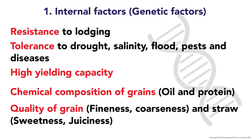In the case of internal factors, the variety should be resistant to lodging, tolerant to drought, salinity, flood, pest and diseases, and should have high yielding capacity and high chemical composition of grains in terms of oil and protein, and high quality of grain like fineness, coarseness, as well as straw qualities like sweetness and juiciness.